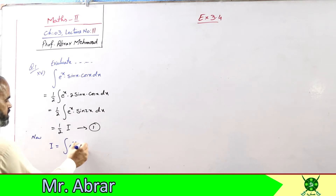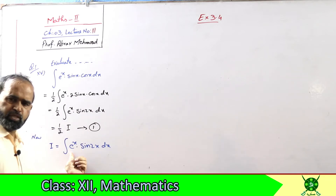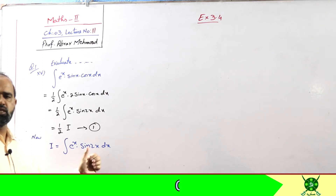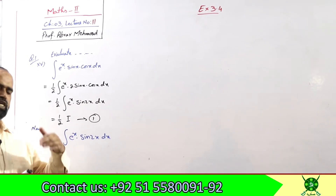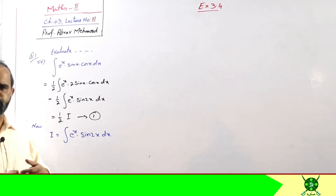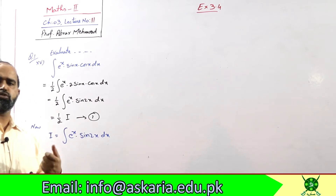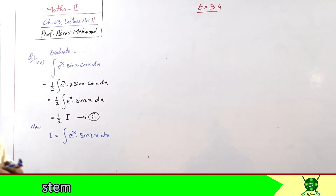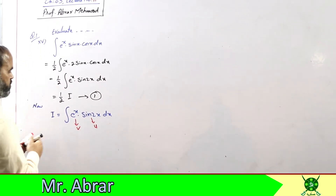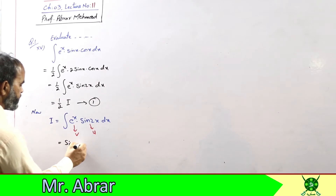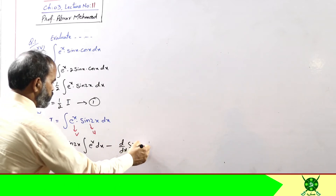Jab trigonometric function aur exponential function saath aate hain, toh yeh repeat hoga. Trigonometric function ko u dena hai aur exponential function ko v dena hai. Order change karna chahein to kar sakte hain, koi issue nahi — same answer aayega. Lekin sabse aasaan technique yahi hai: trigonometric ko u karein aur exponential ko v karein.